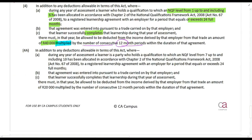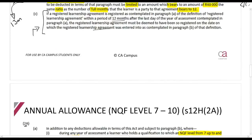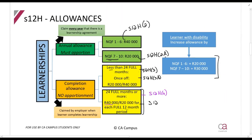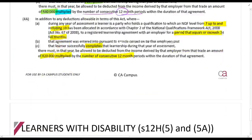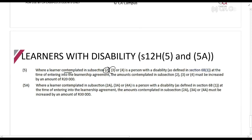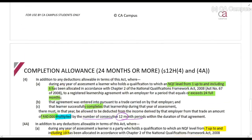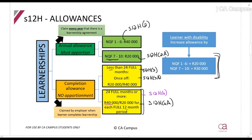Section 12H(4A): NQF level 7 to 10, period equals or exceeds 24 full months, and has been completed — you get R20,000 multiplied by the number of consecutive 12-month periods. Then the disability rule: section 12H(5) states that where a learner contemplated in sections (2), (3), or (4) — so NQF 1 to 6 — has a disability, the amount must be increased by R20,000.